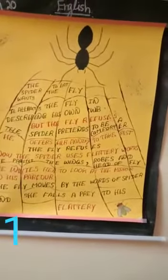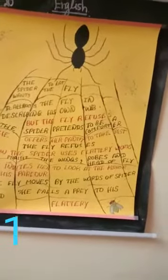The spider wants to eat the fly and it attracts the fly by describing its own web with beautiful, expressive words. But the fly refuses. The fly refuses in the other way. So next, the spider pretends to be a comforter.